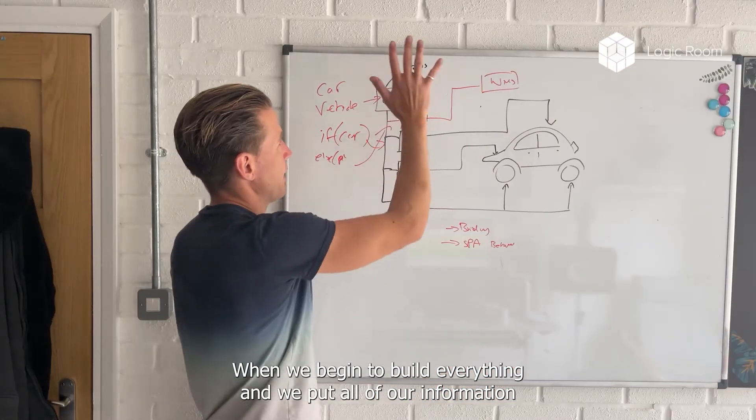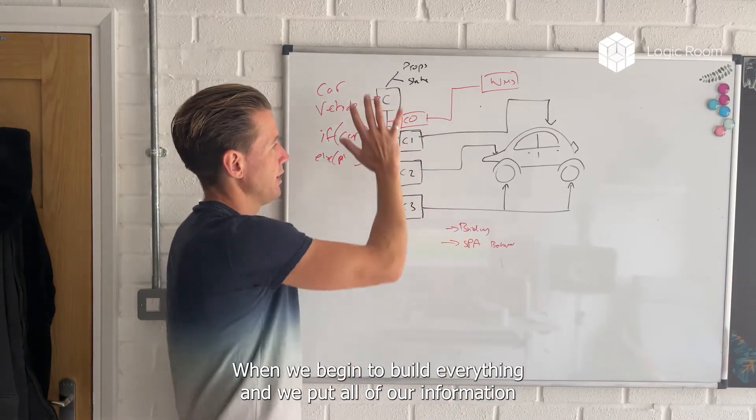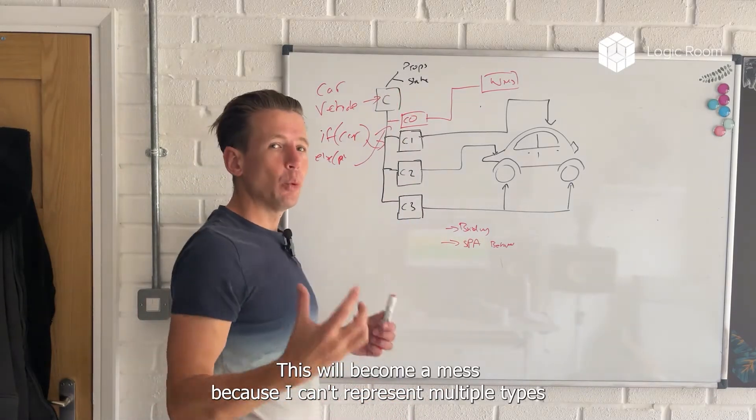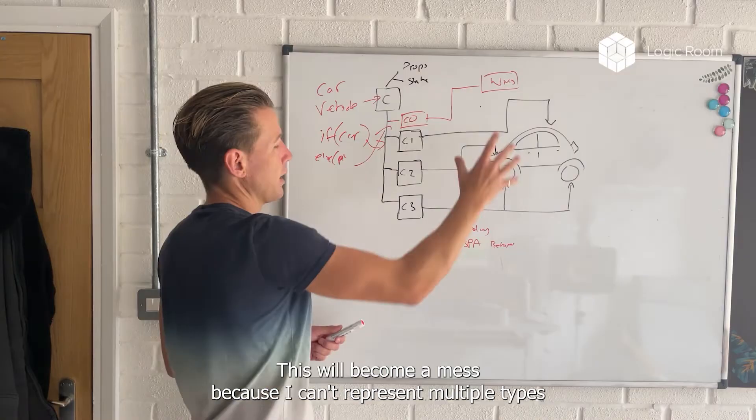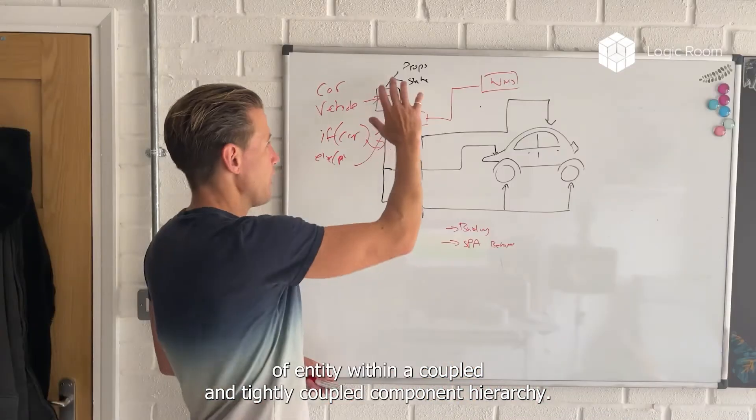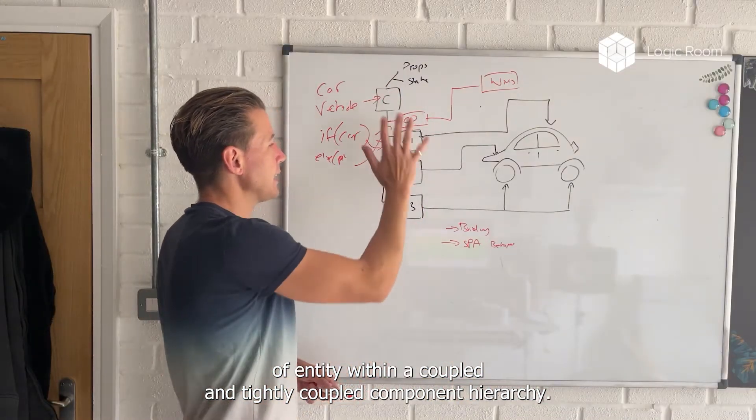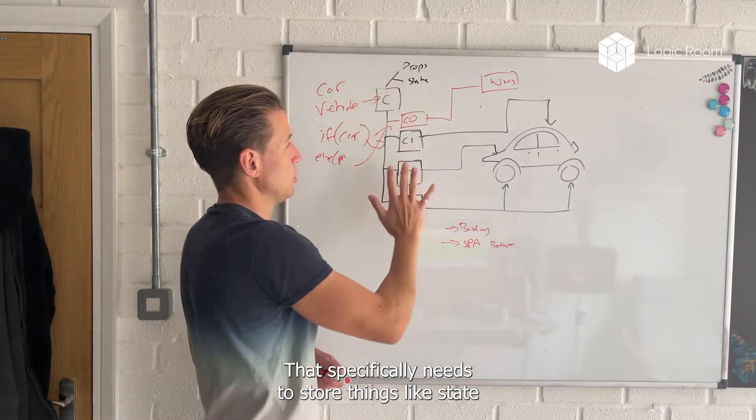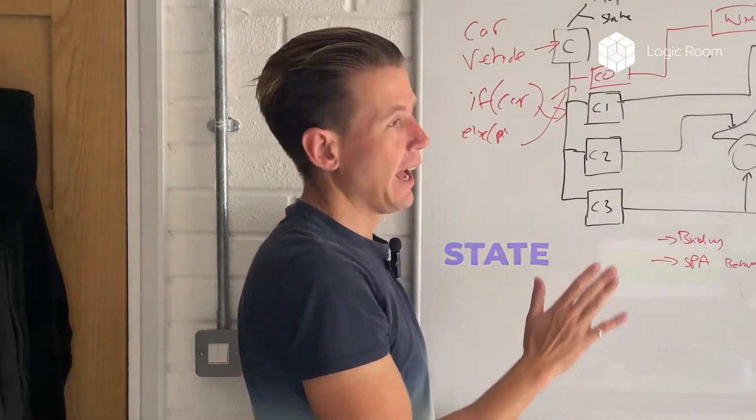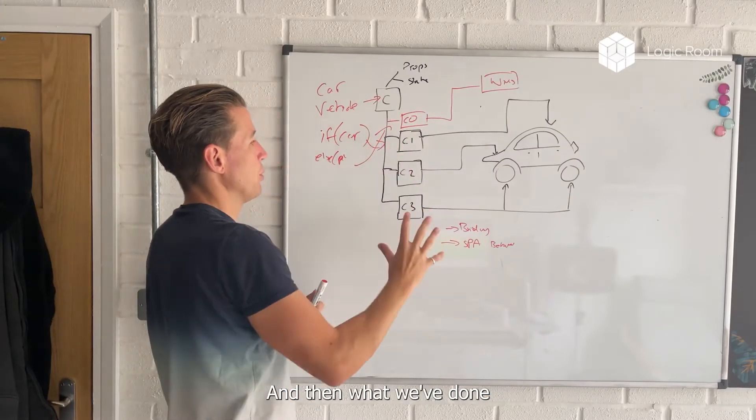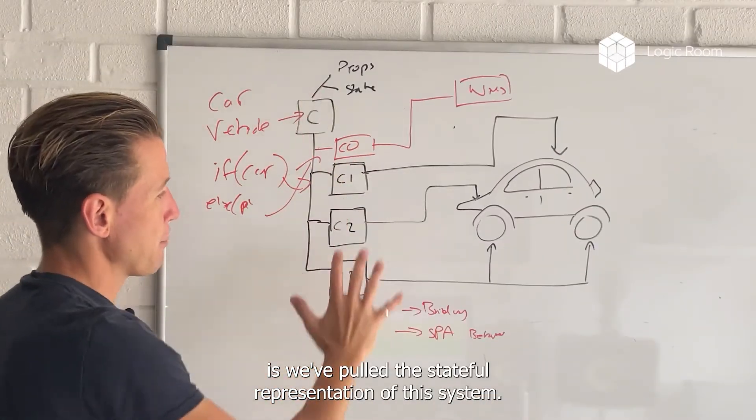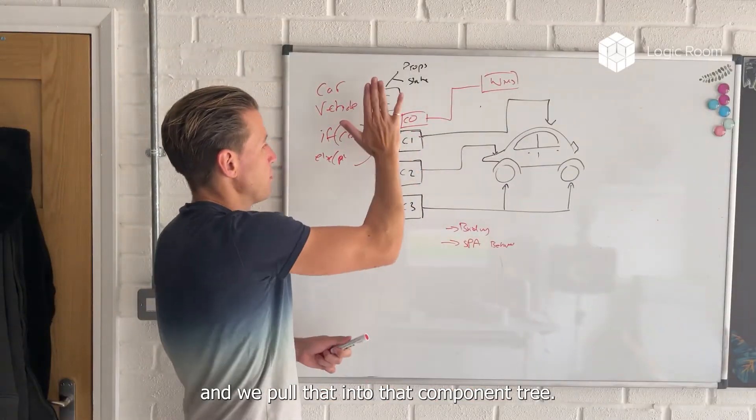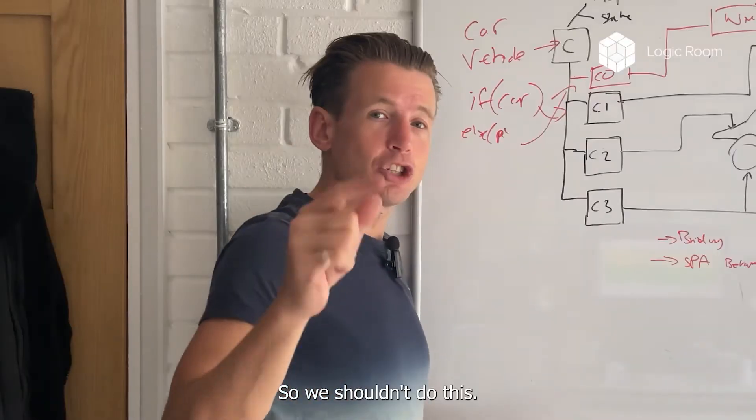When we begin to build everything and we put all of our information in the same relationship, this will become a mess because we can't represent multiple types of entity within a coupled and tightly coupled component hierarchy that specifically needs to store things like state. And the state needs to be mapped. And then what we've done is we've pulled the stateful representation of this system into that component tree. So we shouldn't do this.